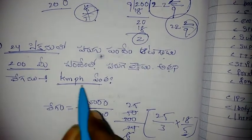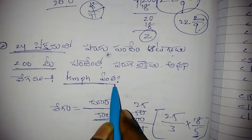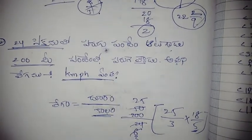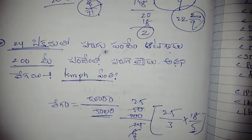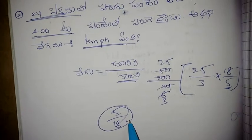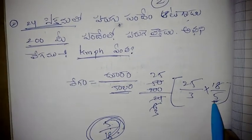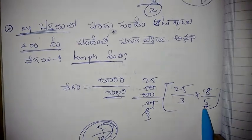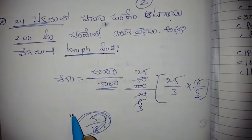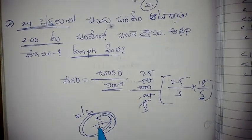KMPH. 18 by 5 — item. Second. 5 by 18. This is second. 18 by 5. This is second. KMPH. This is second.